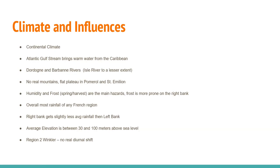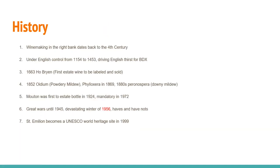Average elevation here is undulating hills from 30 to about 100 meters above sea level, similar to the plateau at Mouton and Pauillac on the Left Bank. We sit on Region 2 in the Winkler scale without a real diurnal shift. History in the region dates back to the fourth century. English control of the region ran from 1154 until 1453, cementing England's thirst for Bordeaux. In 1663, Haut-Brion was first labeled and sold. Then in 1852, oidium — powdery mildew — phylloxera in 1869, and in the 1880s peronospora, which is downy mildew.